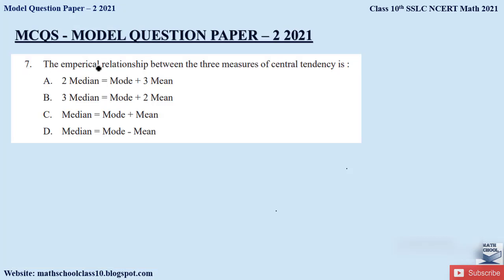Question 7: What is the empirical relationship between the three measures of central tendency? From the chapter Statistics, the empirical relationship is: 3 × Median = Mode + 2 × Mean. The correct option is option B.